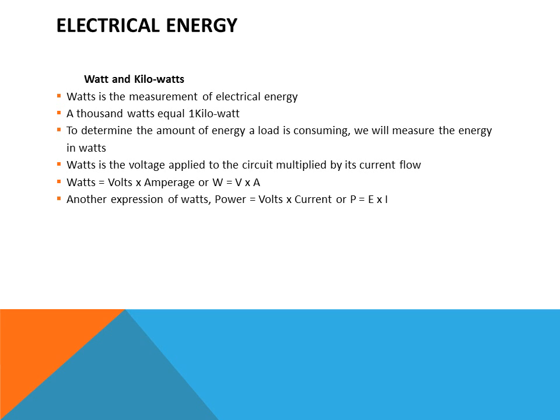Kilowatts or watts is the measurement of energy. Measuring electrical energy involves looking at the relationship between voltage and current flow — the force and the movement of electrons. Watts is the measurement of electrical energy; one thousand watts equals one kilowatt. To determine the amount of energy a load is consuming, we measure in watts. Watts equals voltage multiplied by amperage: W = V × A. This can also be expressed as power: power equals voltage times current, or P = E × I.